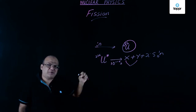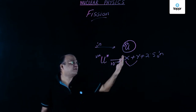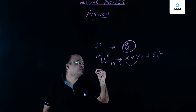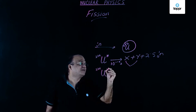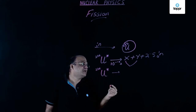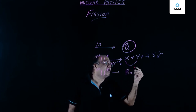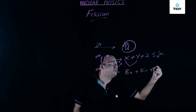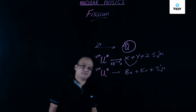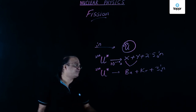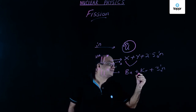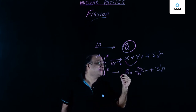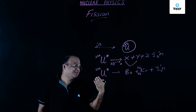Here is one example of a nuclear fission reaction. Uranium-236 can break up into barium and krypton. Krypton has atomic number 36, barium has atomic number 56 — total 92, matching uranium. Plus you get 3 neutrons in that particular reaction.